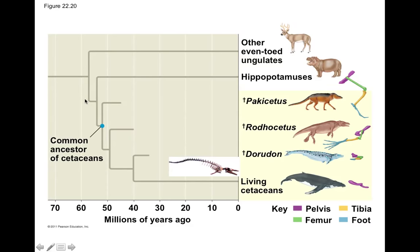You might think it's an incredible statement that whales are more closely related to deer than they are to fishes, but we can make this claim because we have extraordinary evidence to support it — including fossils from organisms such as Pakicetus, one of the earliest ancient ancestors of whales, where we can see bones of the hind limb including the pelvis, femur, tibia, and fibula.